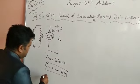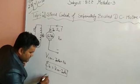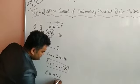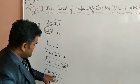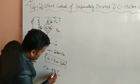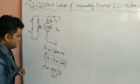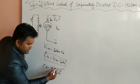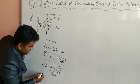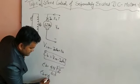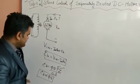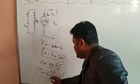Now we know the formula for back EMF: E_B = φNPZ / 60A, where φ is flux, N is speed in RPM, P is number of poles, Z is number of conductors, and A is number of parallel paths. Z is constant, poles are constant, and A is also constant. So we conclude that E_B is proportional to φ × N.